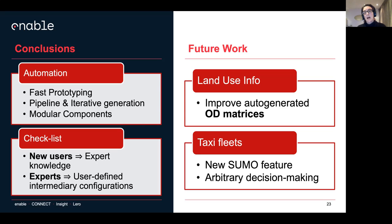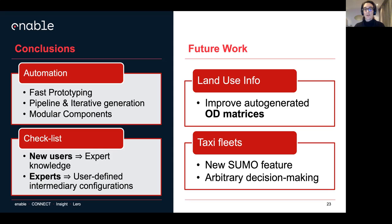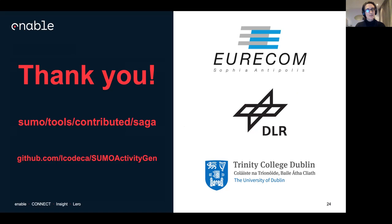Finally, the taxi fleet. I seriously want to introduce the taxi fleet, which is a new Sumo feature. The problem is that in order to have taxis, I need to set a lot of arbitrary decision-making. The idea of Saga is that it's not going to make decisions for you — everything should be configurable so you get exactly what you want. So I'll have to find a way to have user-configurable arbitrary decision-making. I want to conclude by saying that this work started at Euricom. I have to say thank you to Jakob, because without him it would not be in the Sumo contributed tools. Now that I'm at Trinity College, I'm still working on it. You can find it in the Sumo contributed tools or on my GitHub. Thank you for your time.